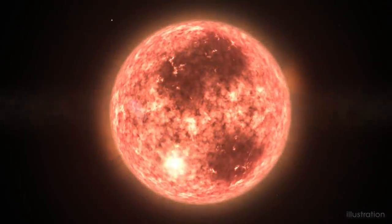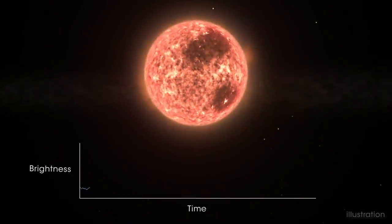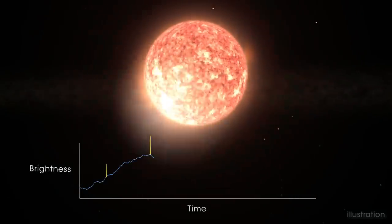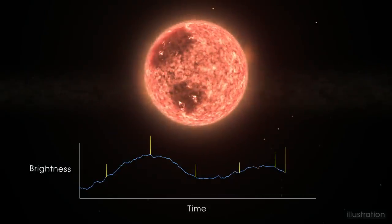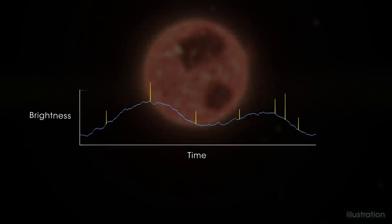The planet's host star is very young. Flares and other phenomena also alter its brightness, which complicated the search. In order to find AU Mic b, the science team had to remove these effects from the data.